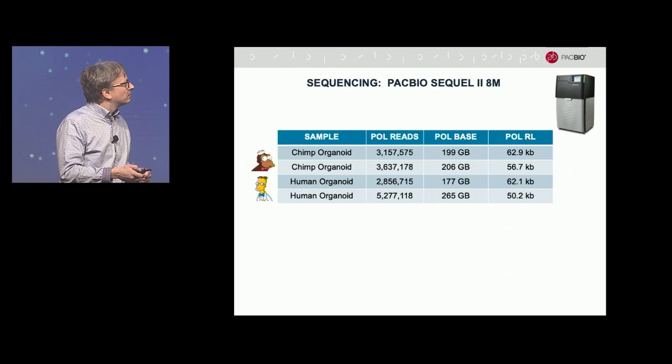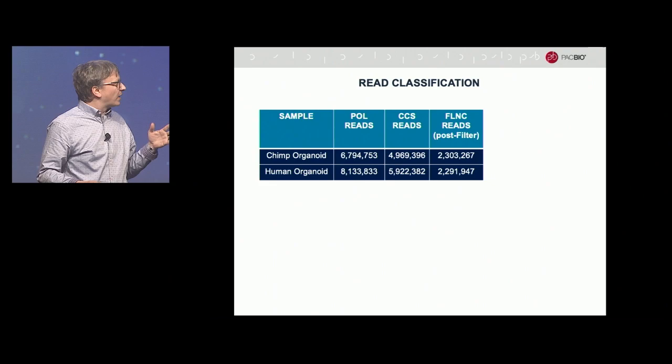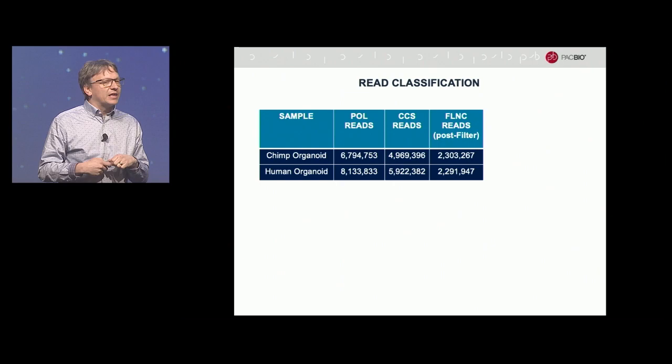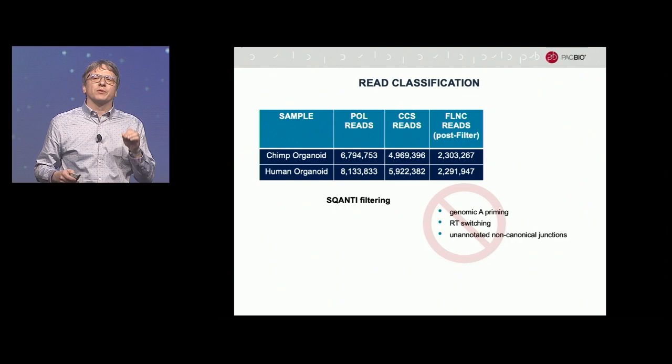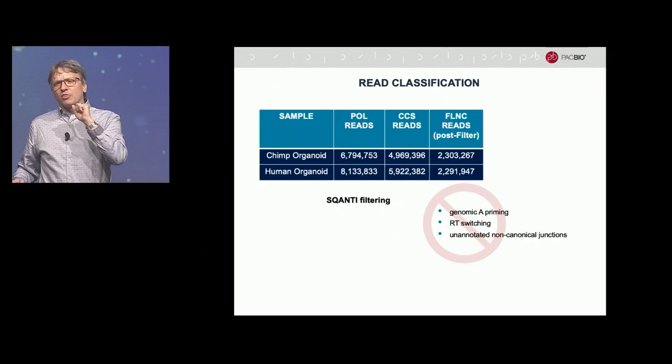We took these reads and classified them. We got about 5 to 6 million CCS reads out of these two SMRT cells, then selected the ones useful for our analysis — the full-length non-chimeric reads, or FLNCs. One filter removes spots where reverse transcriptase started synthesis in a genomic poly-A segment: if an intron contains 3, 4, or 5 As in a row causing spurious RT priming, we remove those to keep only legitimate poly-A tails.